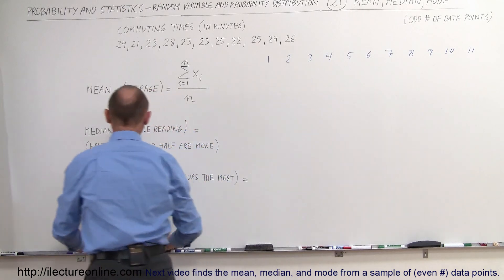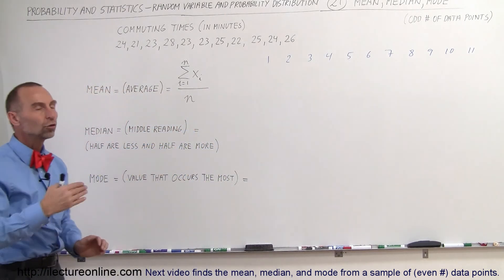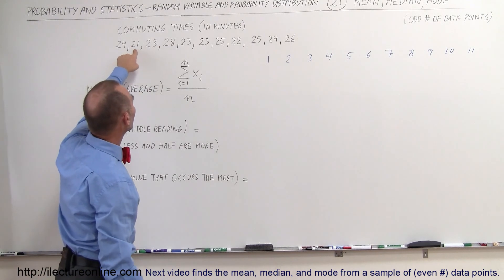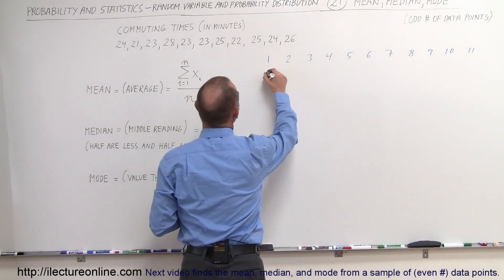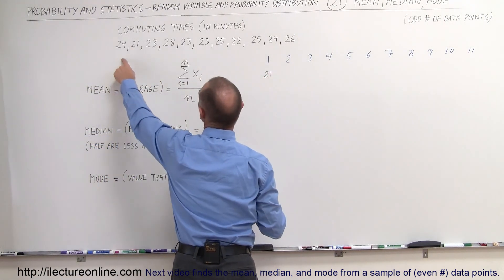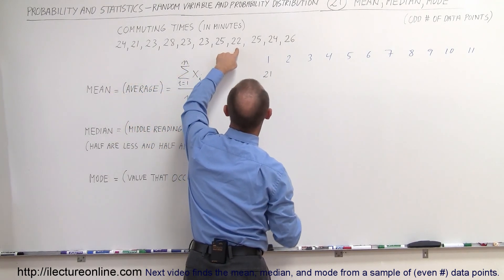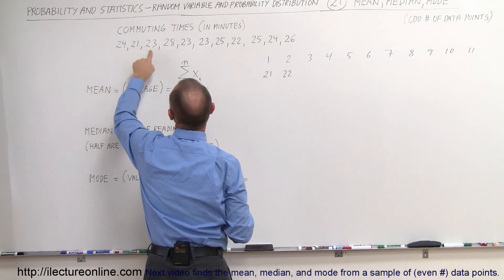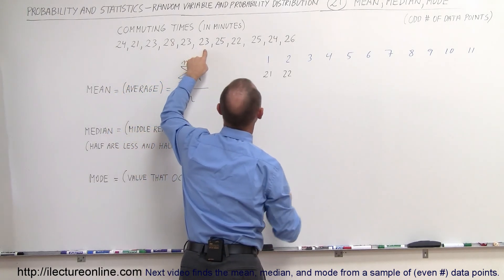What we're going to do now is we're going to order them from smallest to largest. So we go down the line here, we notice that 21 is the smallest, so we'll put that as number one. Then 22, do we have any 20? Yep, we have one 22. All right, how about 23? There's one, there's two, there's three 23s.